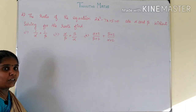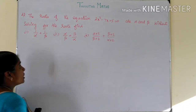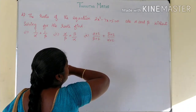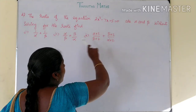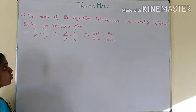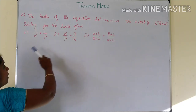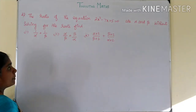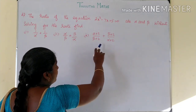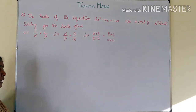The roots of the equation 2x² minus 7x plus 5 equal to 0 are alpha and beta. Without solving for the roots, find: 1/α + 1/β, then α/β + β/α, then (α+2)/(β+2) + (β+2)/(α+2).